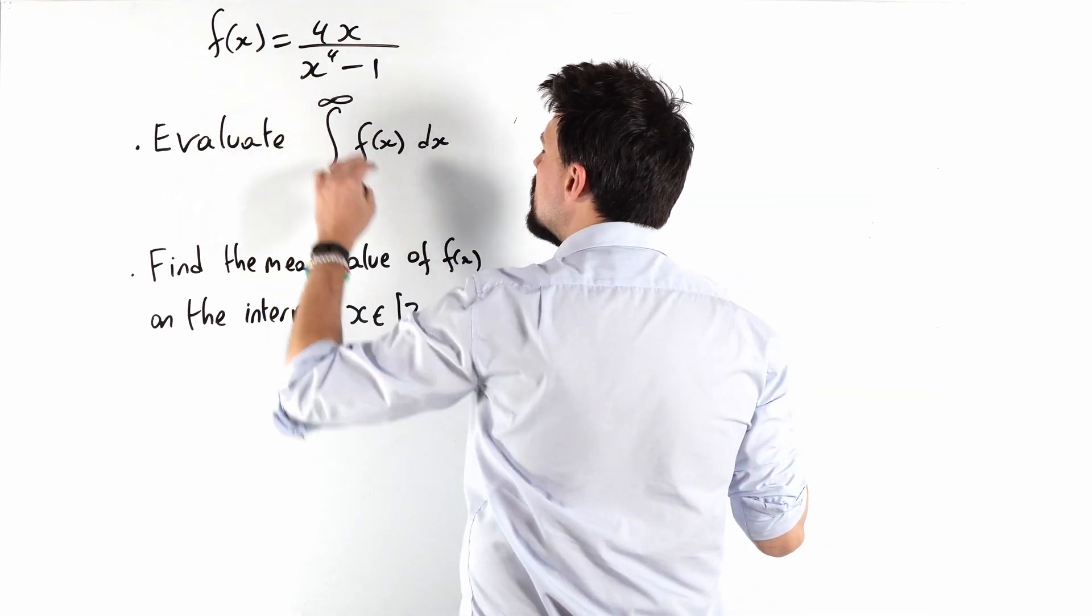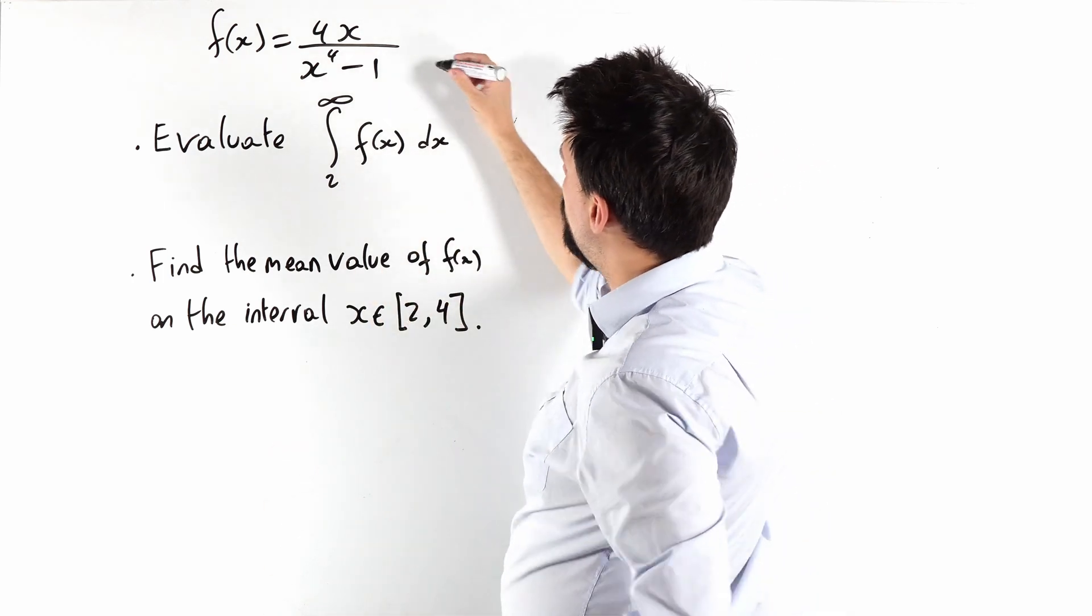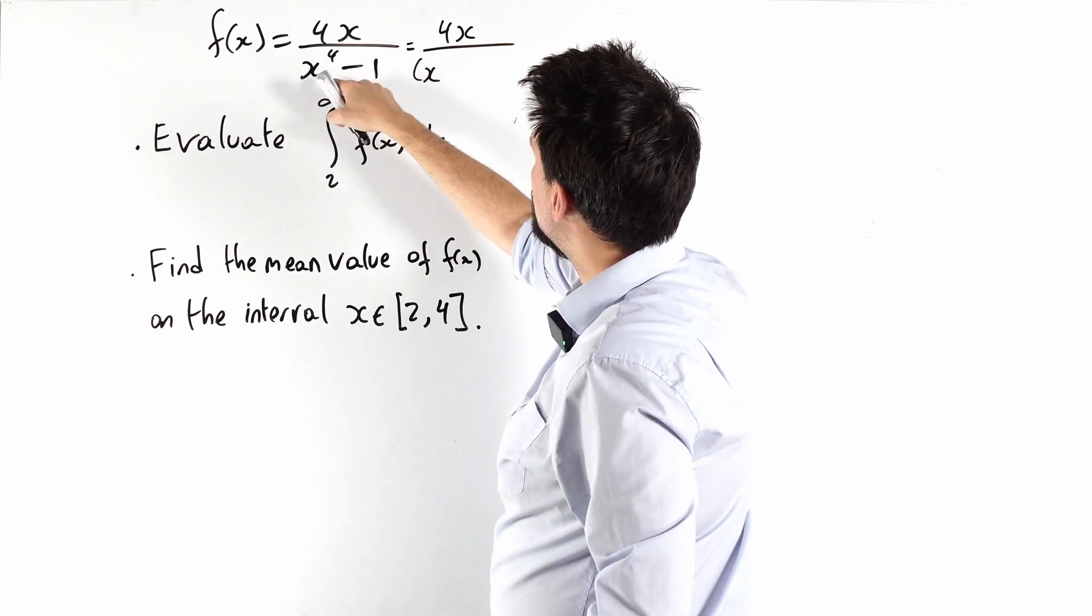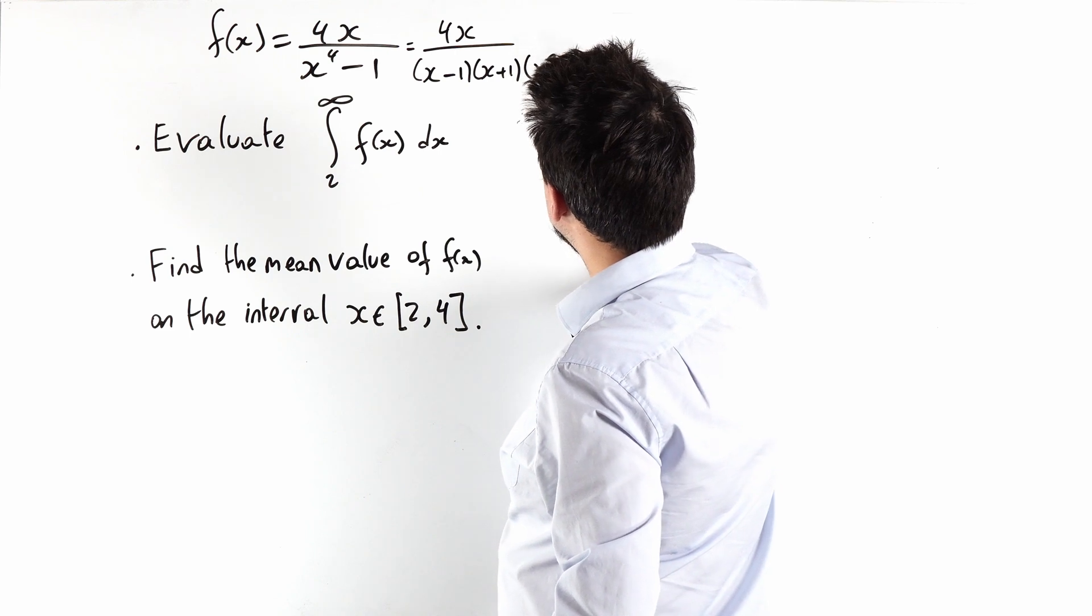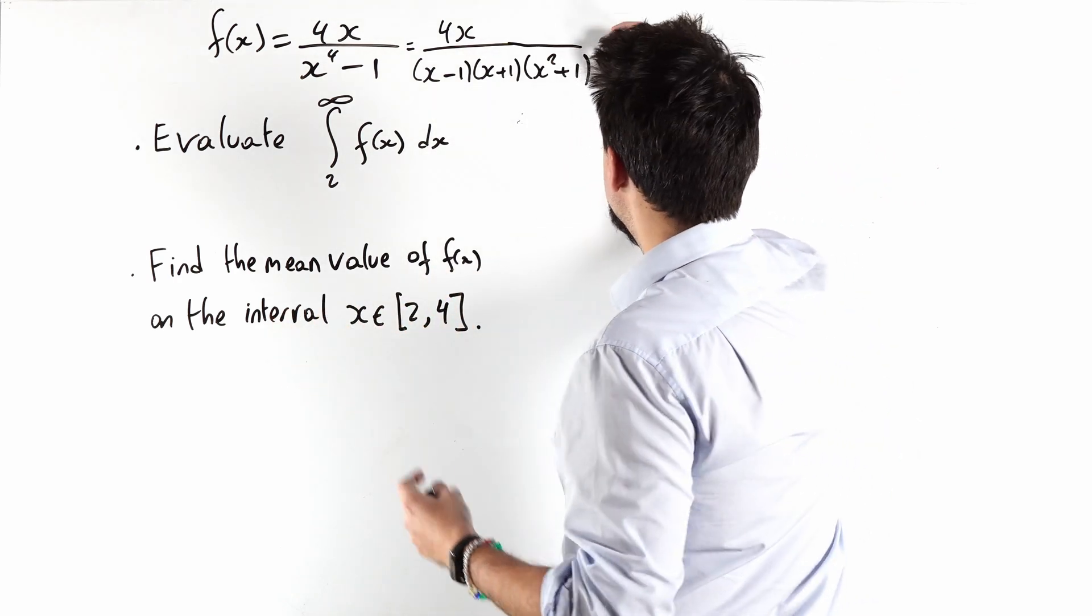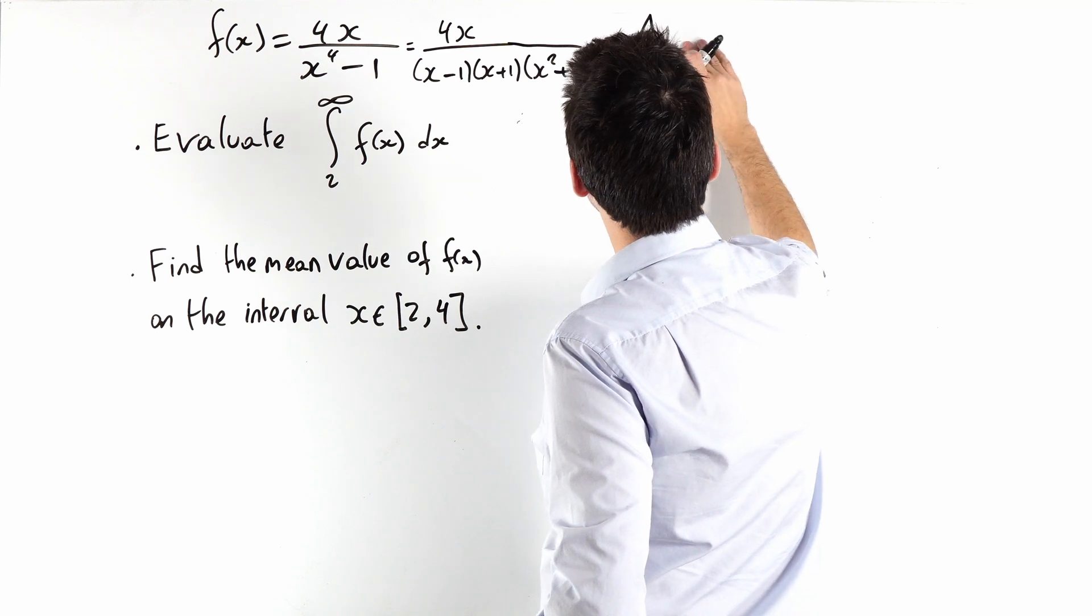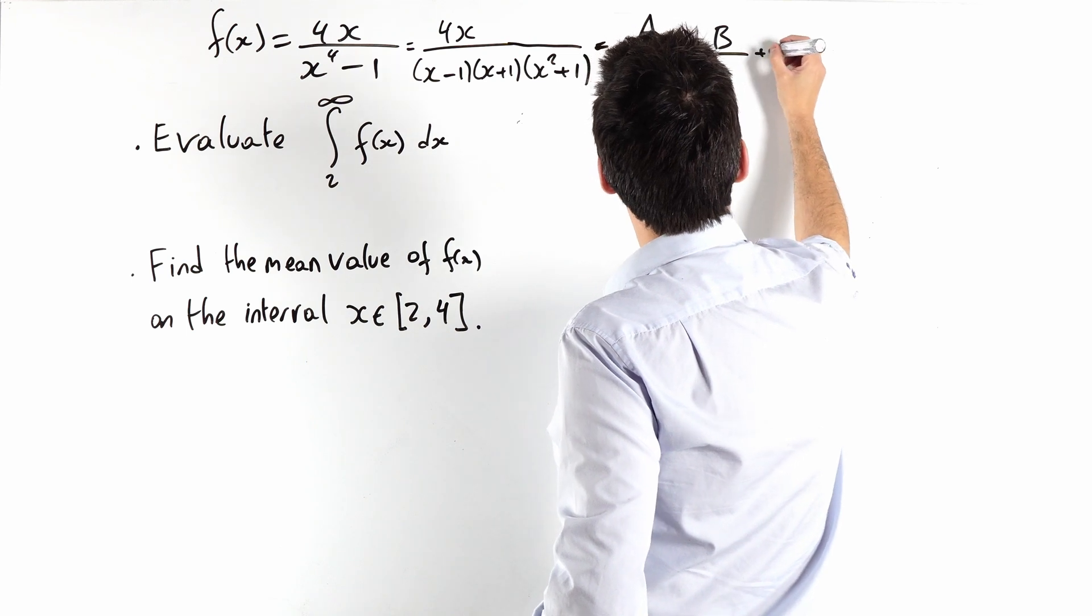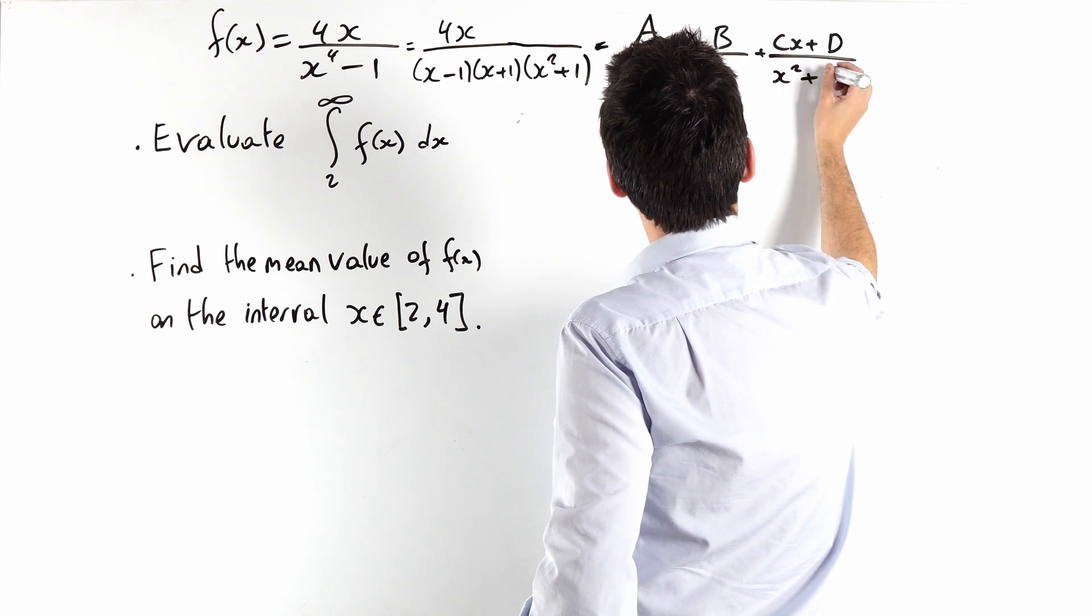First things first, we're looking at this function. Hopefully you're all going, but Nick, we can obviously split this into partial fractions because this will factorize into x squared minus 1, which is x minus 1, x plus 1, and x squared plus 1. So this is obviously going to split into a over x minus 1, plus b over x plus 1, plus cx plus d over x squared plus 1.